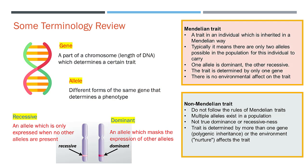Next up, we have a quick review of terminology. We define a gene as part of a chromosome which encodes for a certain trait, whereas an allele represents different forms of the same gene that determines the phenotype. For instance, we might have two of the same alleles, termed homozygous, or different alleles from each parent, termed heterozygous. Alleles are further described as dominant if it masks the expression of other alleles, or recessive if it is only expressed when no other alleles are present.